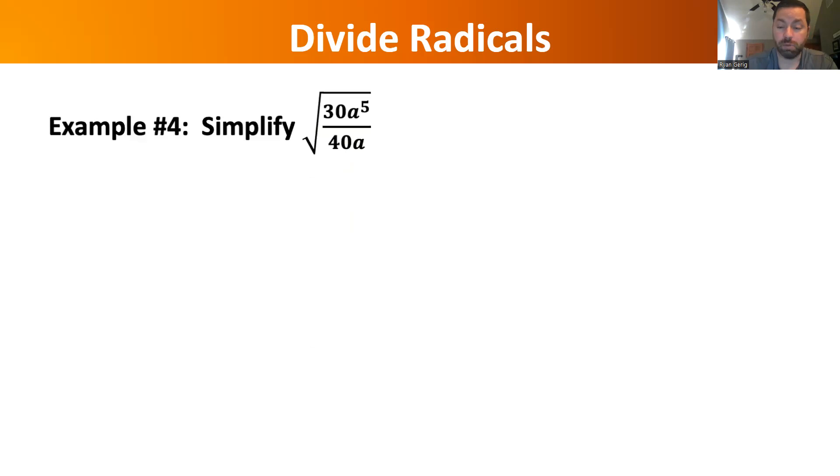A little more complicated fraction is right here. 30 over 40, I know I can reduce that. I can take 10 out of both of those. So that gives me 3 and 4. I can also reduce the a's. There's a to the 5th on top and an a on the bottom. That means that there's 4 more a's on top. You see it written that way, a to the 4th.